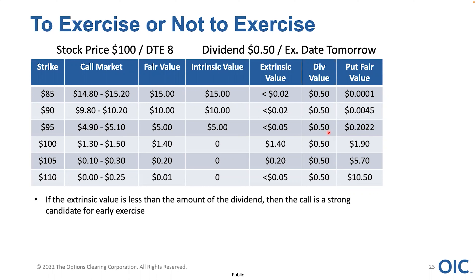Once again, if the extrinsic value or time premium of the option is less than the dividend amount, then that call is a strong candidate to be exercised early for the dividend. Typically the day that people would exercise for the dividend is the day before the ex-date — though they could be exercised two or three days before. Typically, in-the-money calls get exercised the day before the ex-date.